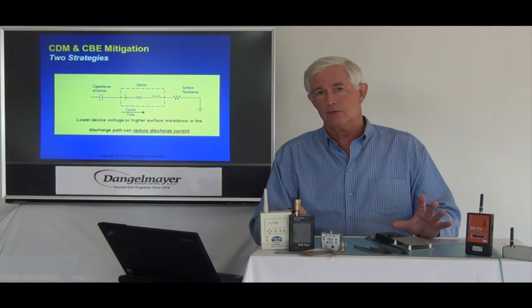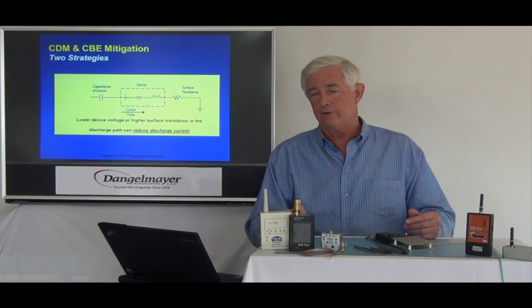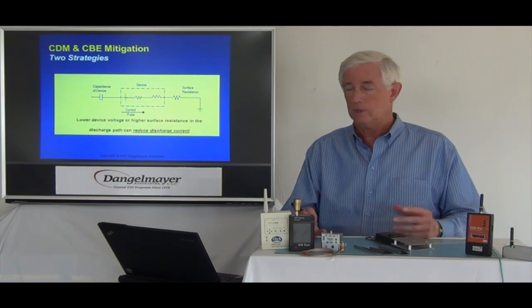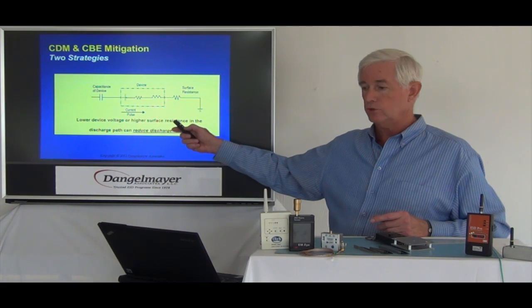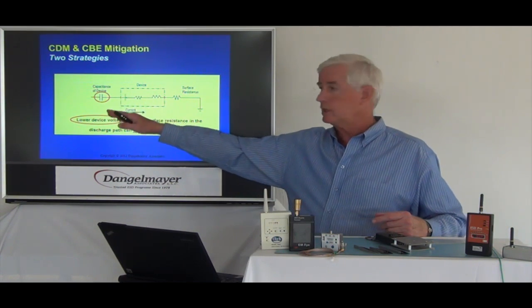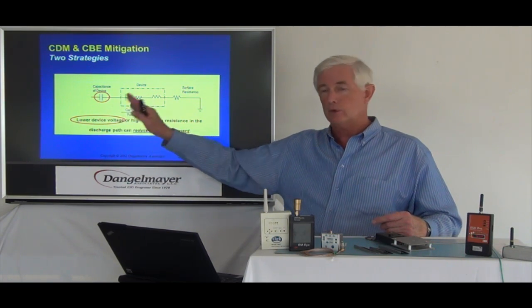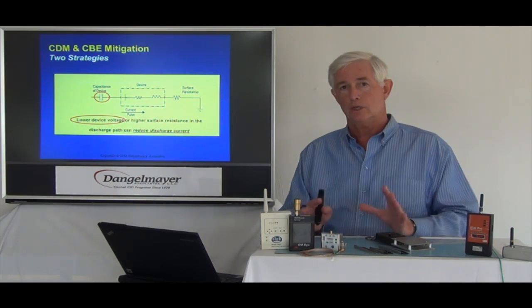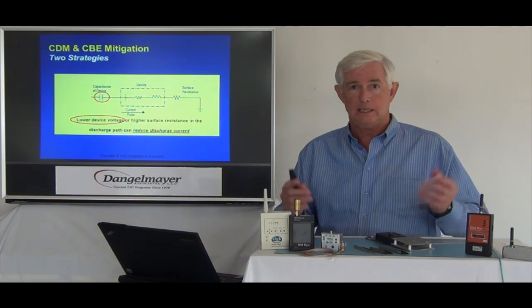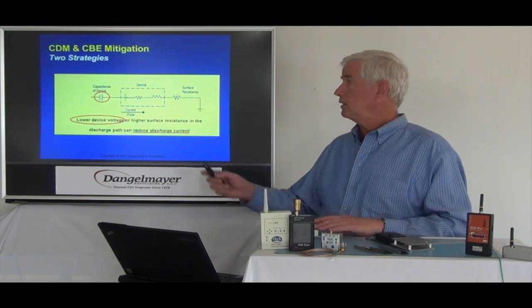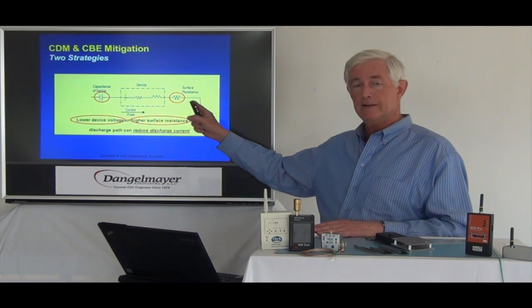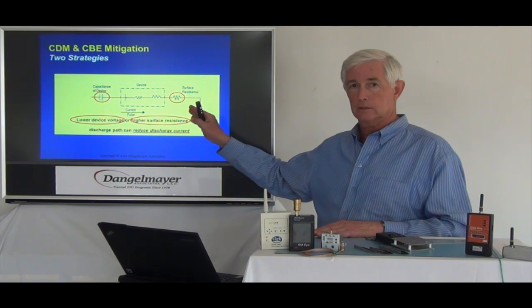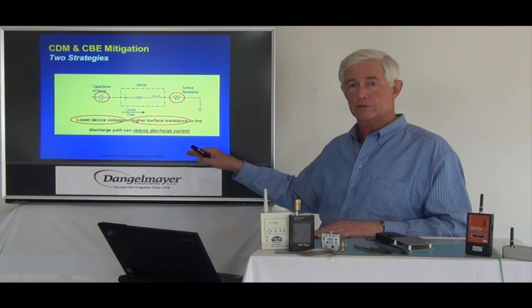To talk about the mitigation techniques, we've brought back this schematic of the charged device model. The objective is to hold down discharge transients below the level that will cause failure. There are two mitigation strategies. One is to keep the voltage low on the device — maintain it with ionization and all the other commonly used techniques to keep the voltage low on your devices, boards, and ESD-sensitive assemblies. The other option is taking advantage of the surface resistance — with the right properties at the point of contact, you can also reduce those discharge currents to a safe level.